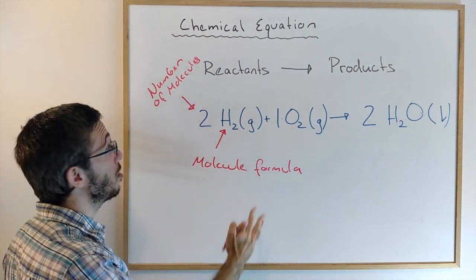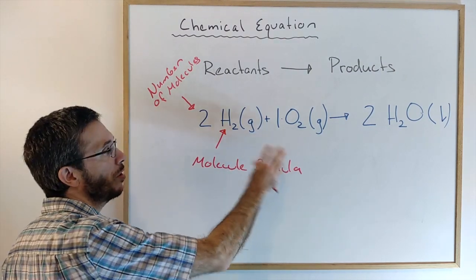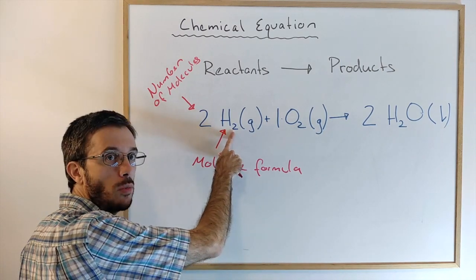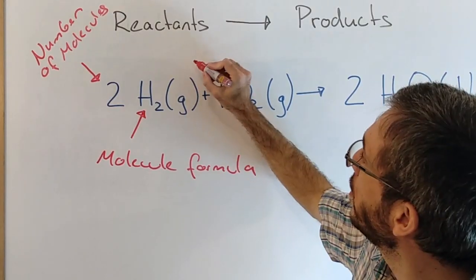Then you have the number of molecules that is involved. Of course, if you actually do this reaction, there are billions of hydrogen molecules involved. But what the reaction equation is saying is that for two hydrogen molecules, you're going to get two water molecules.